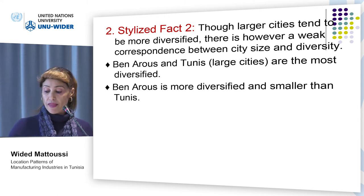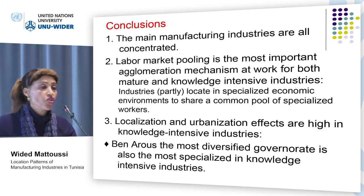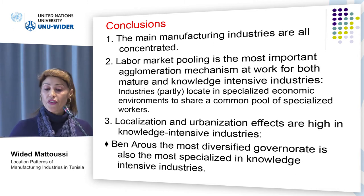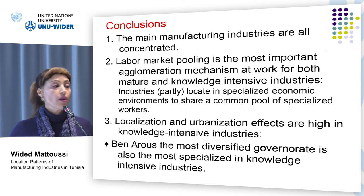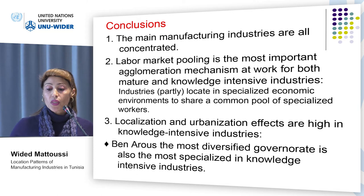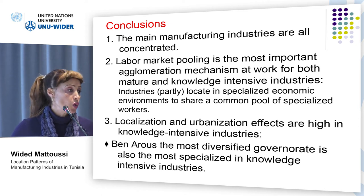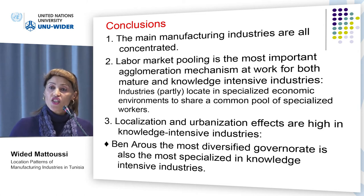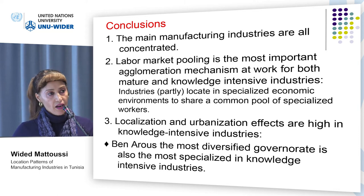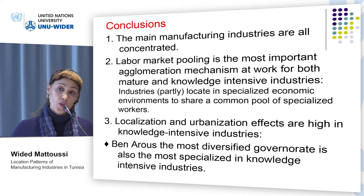After this investigation, one may come up with the following conclusions. First, the main manufacturing industries are all concentrated in Tunisia. Second, labor market pooling is the most important agglomeration mechanism at work for both mature and knowledge-intensive industries, suggesting that industries are partly located in specialized environments to share a common pool of specialized workers. According to several studies, localization effects are low and urbanization effects are high in knowledge-intensive industries. This is not the case of Tunisia, where both effects are high in knowledge-intensive industries.